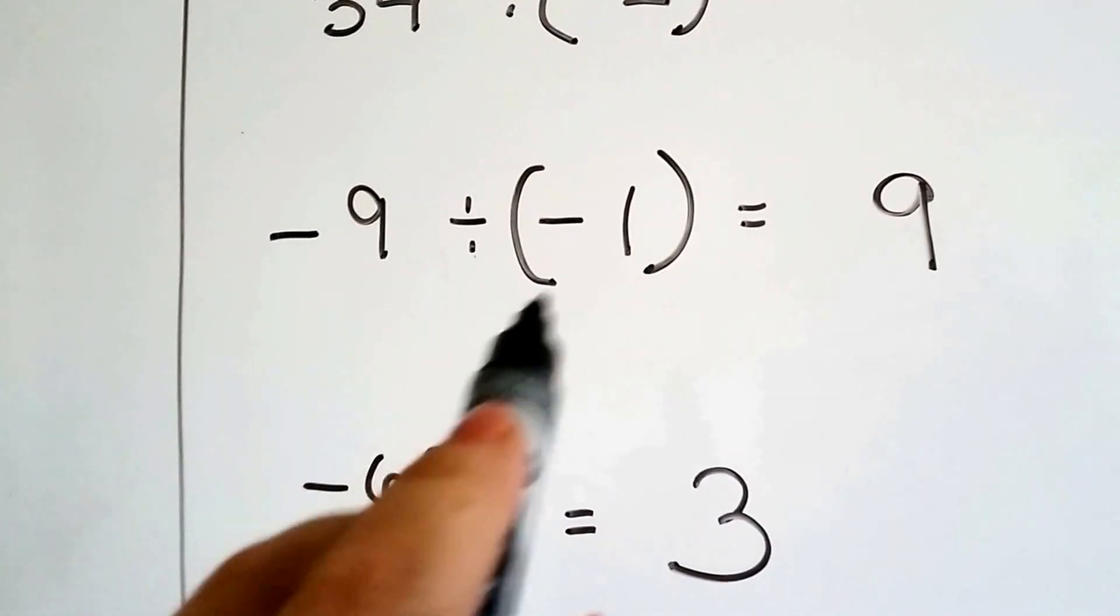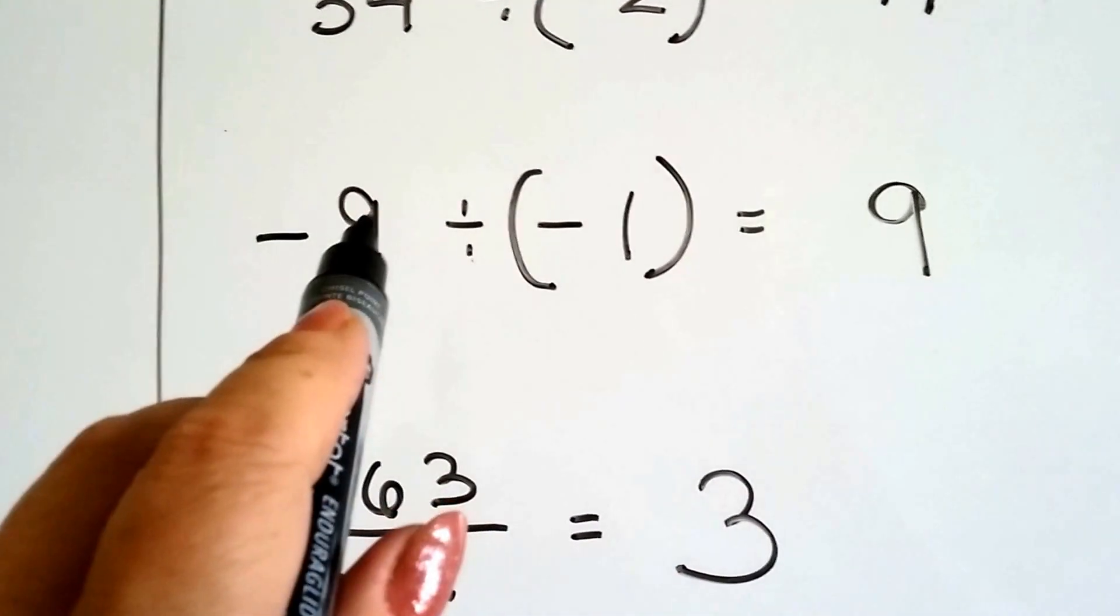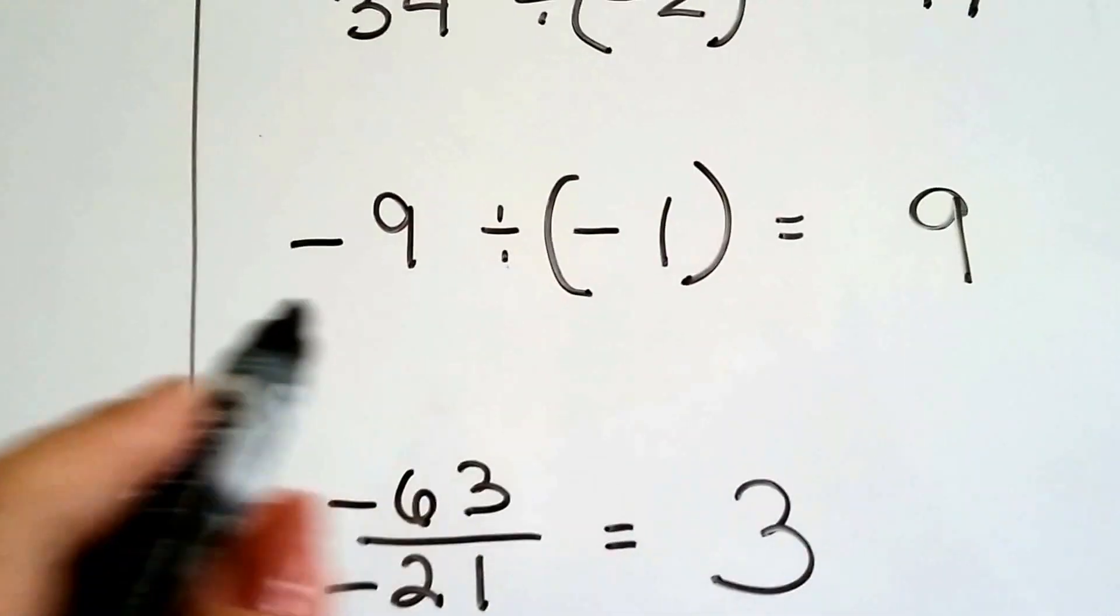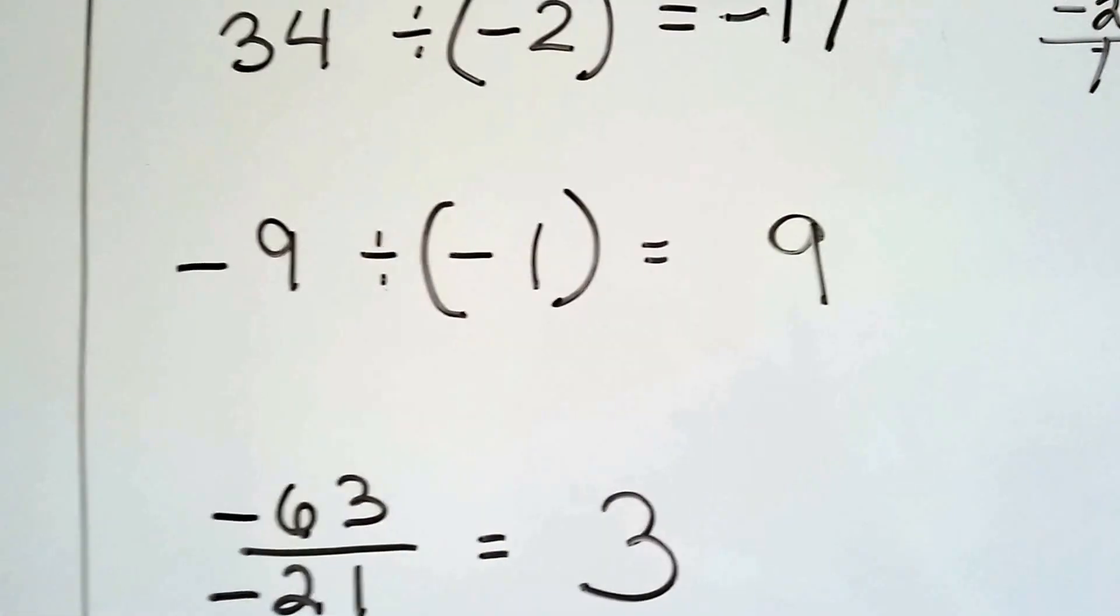What about negative 9 divided by negative 1? We take their absolute values, 9 divided by 1. Well, 9 divided by 1 is 9. And we look at the like signs and say, yep, it's a positive 9.